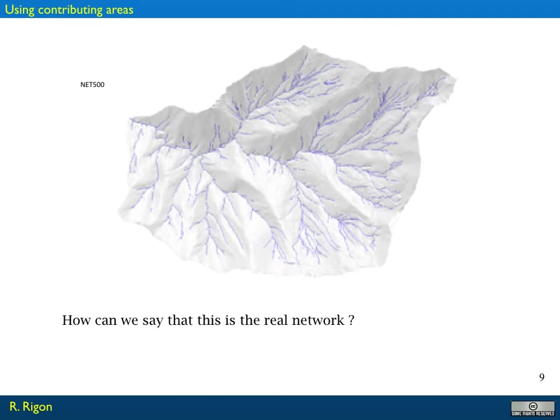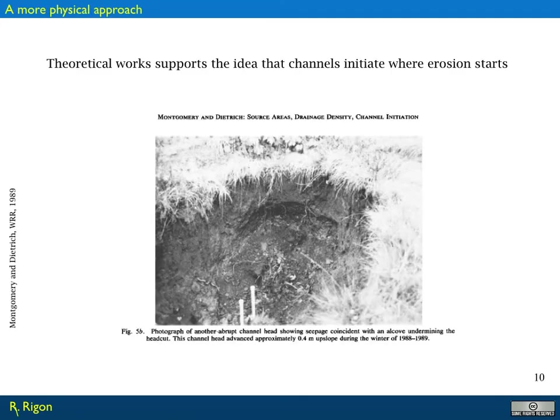Another idea is to take a high-resolution satellite image and compare it — where we can recognize the incision of the river — to say whether an area threshold of 500 pixels is correct or not. But there is still a lot to do in that case. Where do channels actually begin? In soil-mantled landscapes, as Montgomery and Dietrich demonstrated in their famous 1989 work...